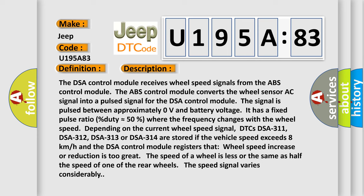DTCs DSA-311, DSA-312, DSA-313 or DSA-314 are stored if the vehicle speed exceeds 8 kilometers per hour and the DSA control module registers that wheel speed increase or reduction is too great. The speed of a wheel is less or the same as half the speed of one of the rear wheels. The speed signal varies considerably.